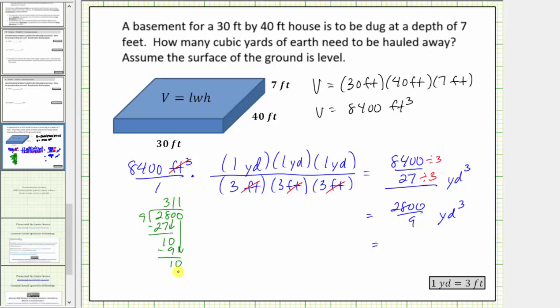So because the remainder is 1, the quotient is 311 and one-ninth.